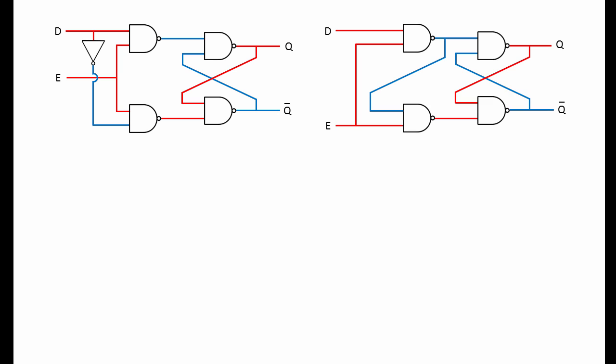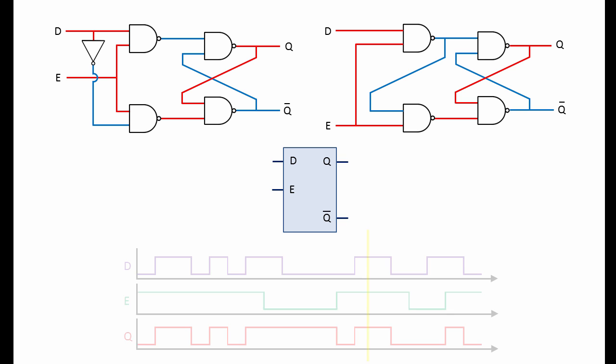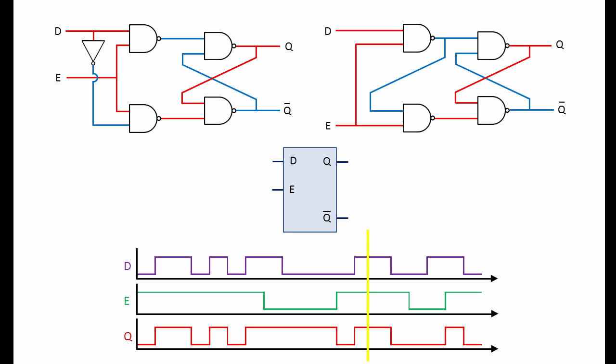To summarise then, a D latch, otherwise known as the data latch, can be built from a gated SR latch. Either by including a NOT gate, or by simply rewiring the existing NAND gates. Regardless of how it was built, the D latch has its own symbol, and its behaviour can be described on a timing diagram.